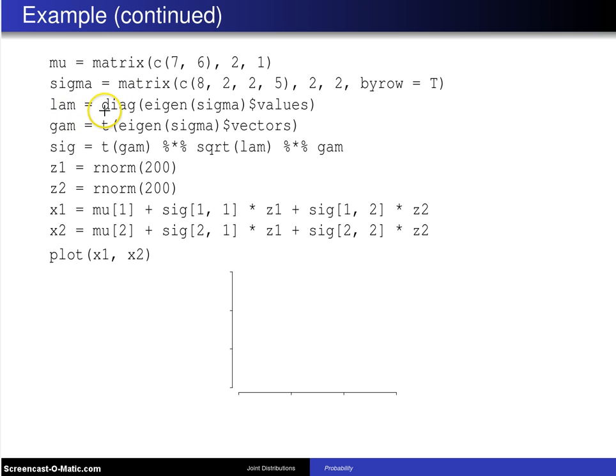That will be a diagonal matrix with the eigenvalues of sigma on its diagonal elements. So then there is gamma and that will give you the eigenvectors of sigma on its columns and therefore we have a transpose in here. Now with that, these will automatically, in R, it will automatically normalize them.